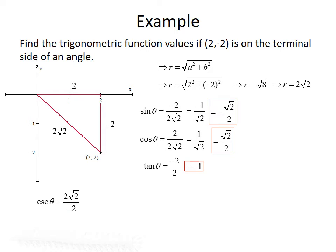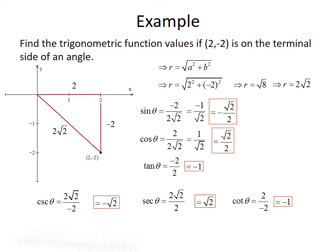Cosecant of theta is hypotenuse over opposite: 2√2 divided by -2. The 2s cancel, giving -√2. Secant of theta is hypotenuse over adjacent: 2√2 over 2. The 2s cancel, leaving just √2. And cotangent is adjacent over opposite: 2 divided by -2, which gives -1.